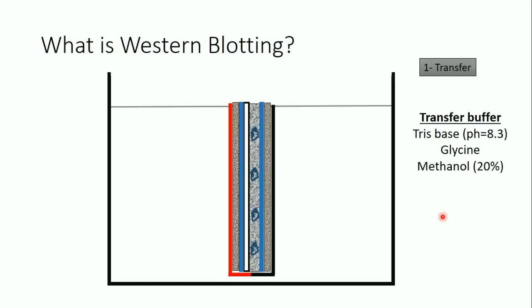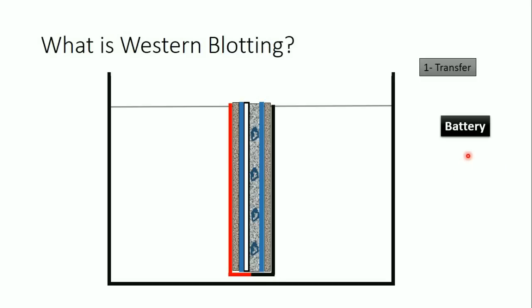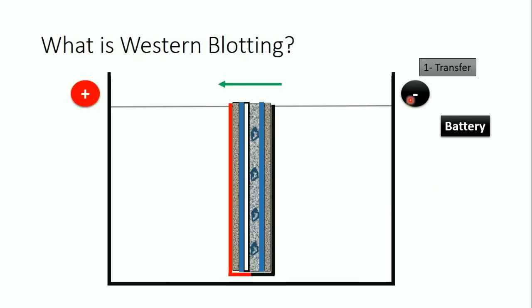Then I apply an electrical current using a battery or a power source, applying a negative charge and a positive charge. The negative charge is applied from the black side and the positive charge from the red side. The color coding helps me differentiate: once the sandwich is inside the plastic container, I put the gel on the black side and the membrane on the red side — so negative charge is on the gel side and positive charge is on the membrane side.